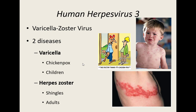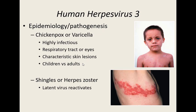Chickenpox is more common in children, although now with a vaccine it's less common. Once you've had chickenpox, that virus goes dormant — it remains latent in the body. At some point in the future, about a third of people who've had chickenpox will develop shingles, the herpes zoster disease. It gets reactivated later in life — on average around age 50 and up — although it can reactivate earlier.